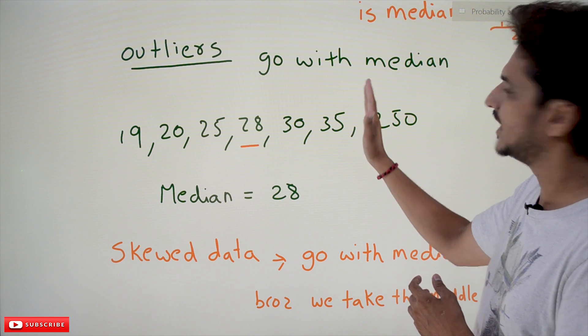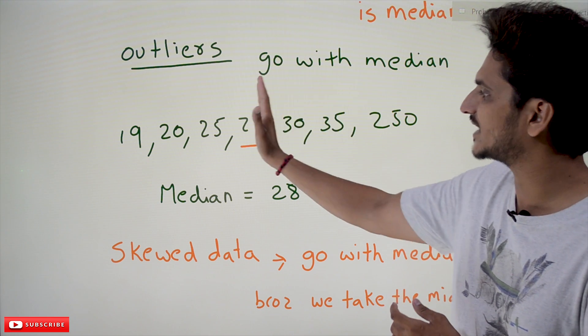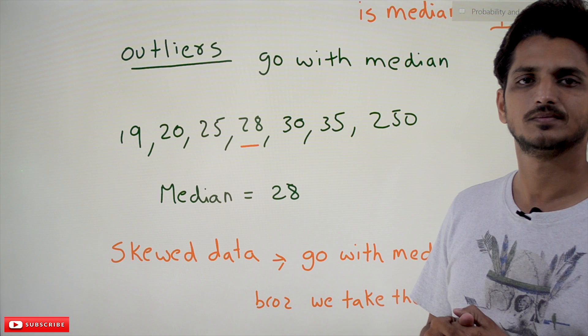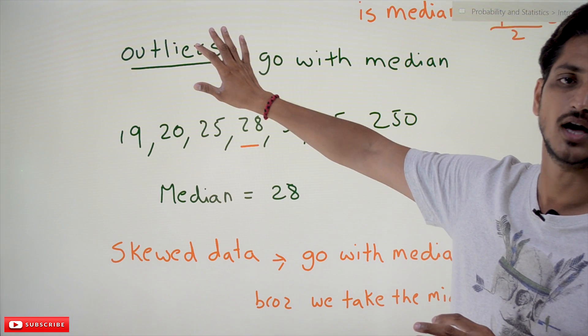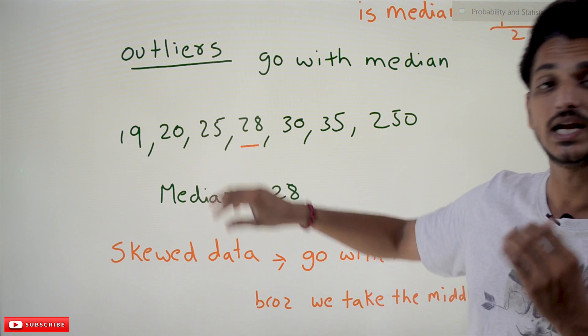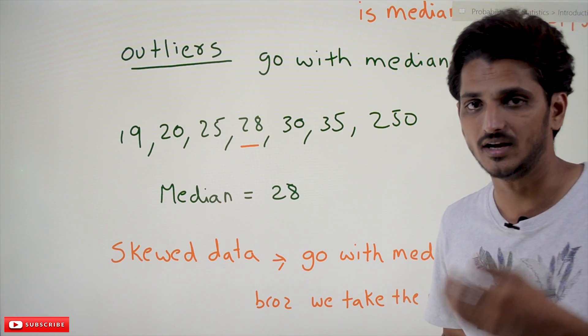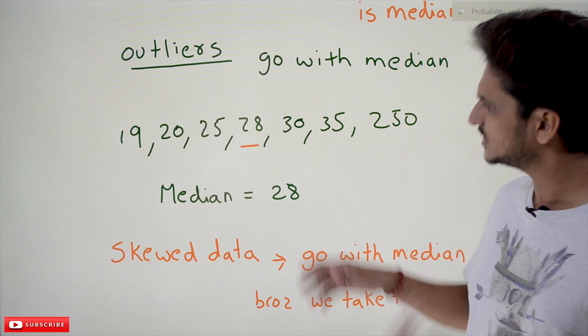That's why the mean will come around here. We are not getting the exact central value. In this type of situation, whenever there are outliers, we can calculate the median. You can take median as your central tendency. This is one situation.